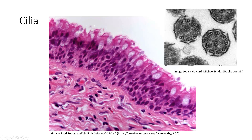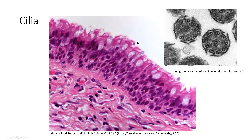They're going to wave in kind of a come-hither motion, and what that's going to do is impart a current in the layer of mucus found on the surface of this epithelium — mucus secreted by these little goblet cells here. The cilia are going to move the mucus up the upper respiratory tract and trachea into the pharynx, where that mucus can be swallowed. In summary, cilia contain axonemes and are specialized for movement.